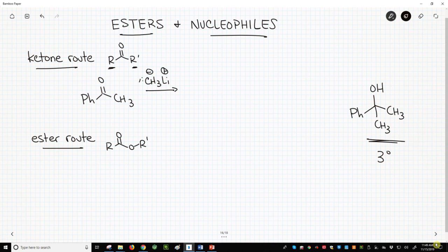This forms a tetrahedral intermediate, and after addition of water as a second step, we will get protonation and get our alcohol product. Great. How about the ester route? We can add two R groups at once to an ester, with the limitation that the R groups need to be the same.